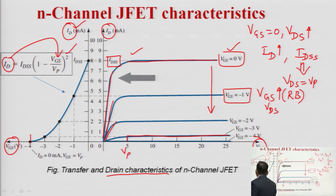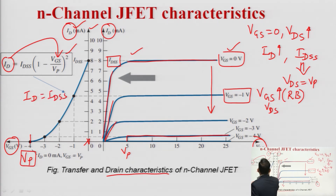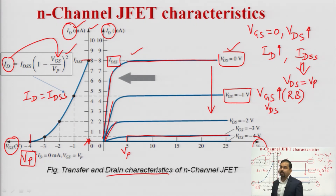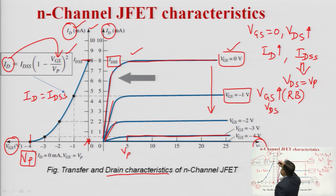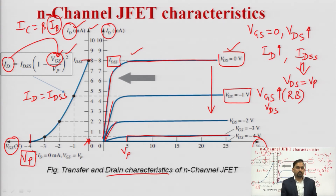When VGS equals VP, the drain current is 0. When VGS equals 0, from the expression ID equals IDSS, we get the peak value. So the transfer characteristic lies between 0 and IDSS. From this expression we can confirm that FETs are voltage control devices, whereas BJTs are current control devices — in BJT IC equals beta times IB where the controlling variable is IB, while in FET the controlling variable is VGS, the gate-to-source voltage.